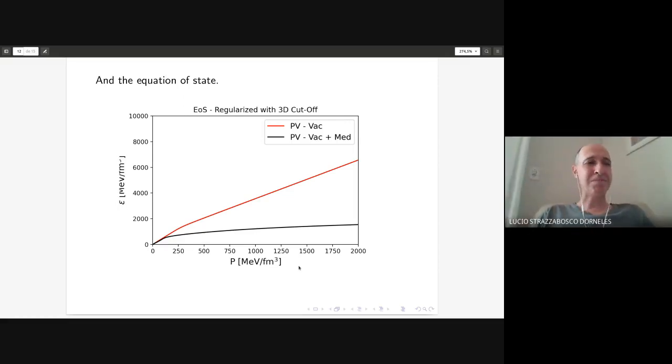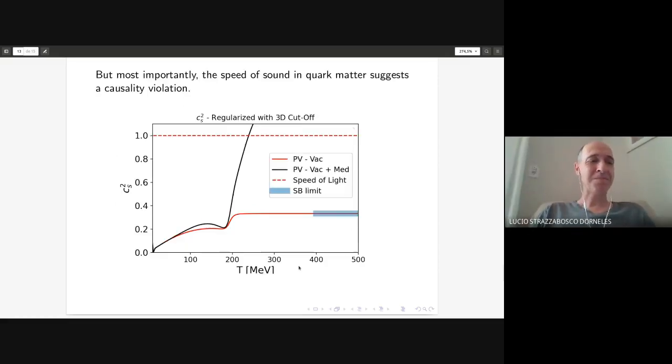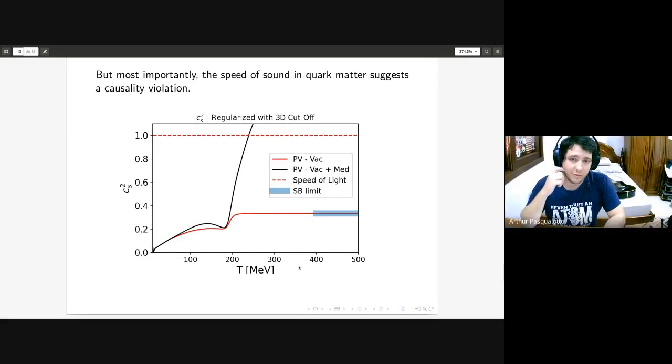But the most weird result so far is that if you take the speed of sound squared and you calculate for both situations when you regularize the vacuum and the medium, you can see that for a not so high value of temperature you have the speed of sound greater than the speed of light, and this is something very strange to have. This result was obtained with three-dimensional cutoff.